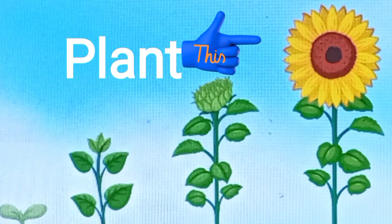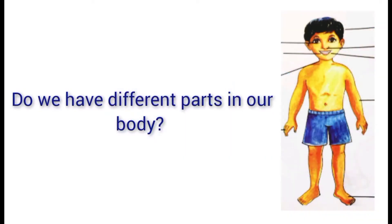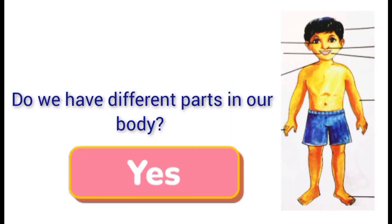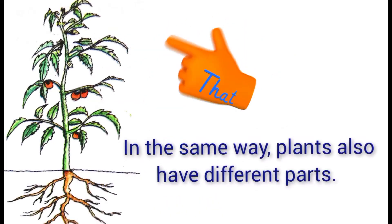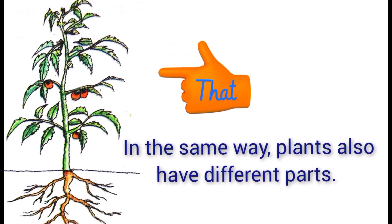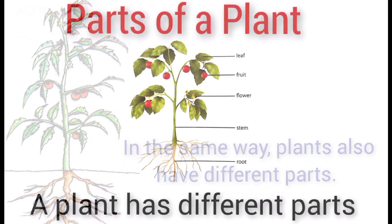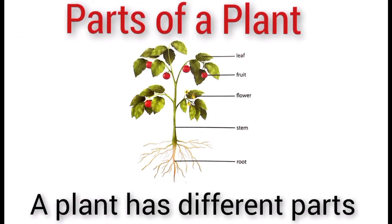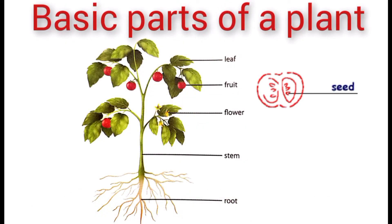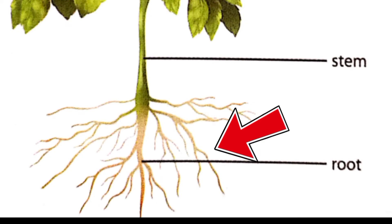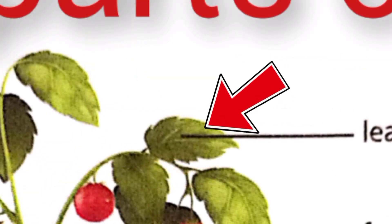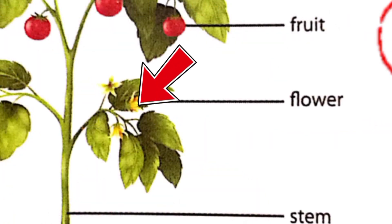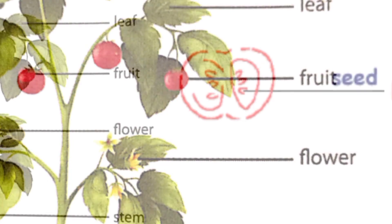Just like we have different parts in our body, plants also have different parts. A plant has several basic parts: root, stem, leaf, flower, fruit, and seeds.